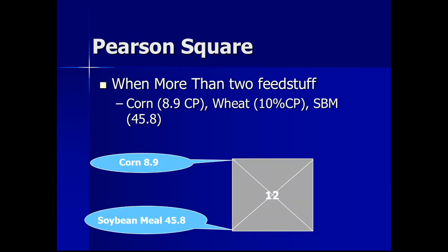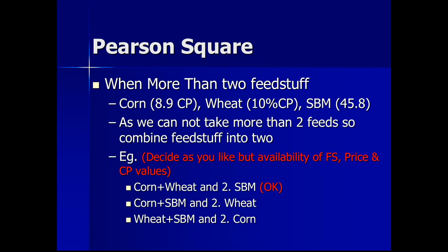When using more than two feedstuffs, more calculations are required. In this example, we have corn (8.9% protein), wheat (10% protein), and soybean meal (45.8% protein). Since Pearson square can only use two feedstuffs at a time, two must be combined into one 'feed mix,' which is then treated as a single feedstuff. The remaining feedstuff is used as the second ingredient.